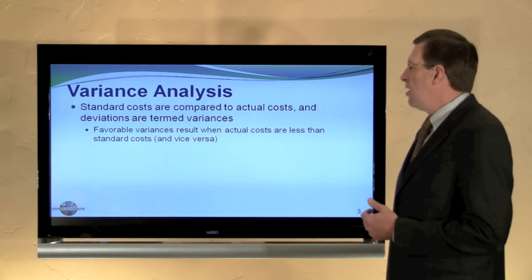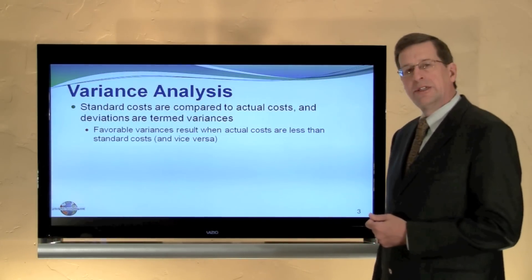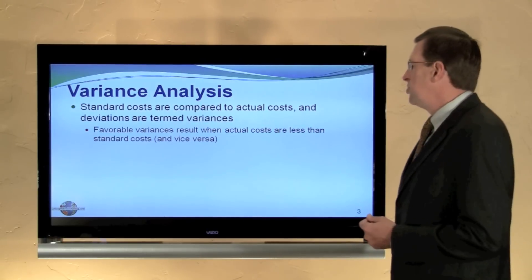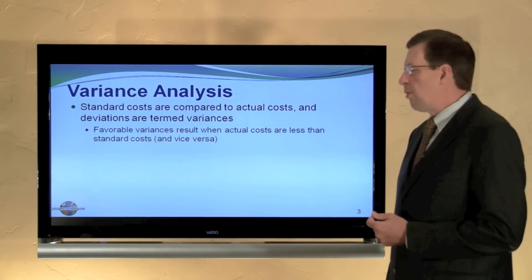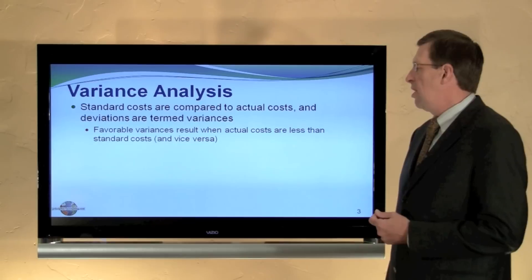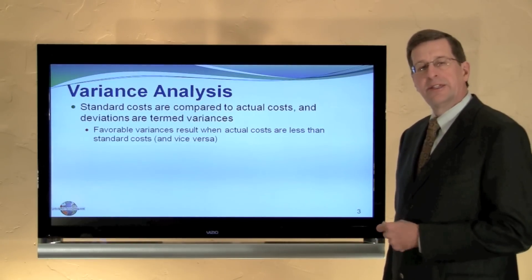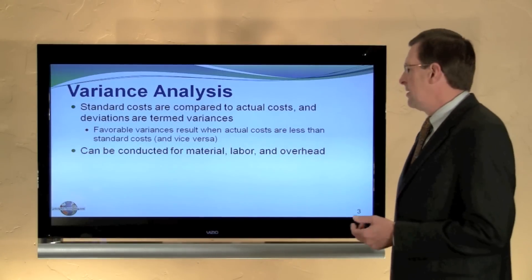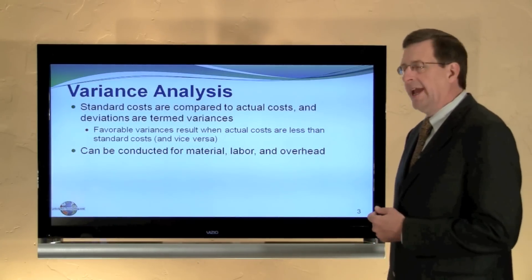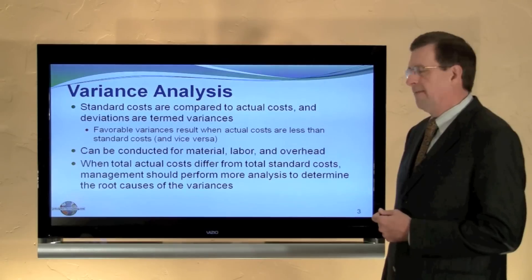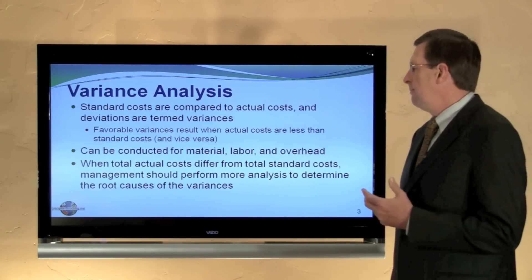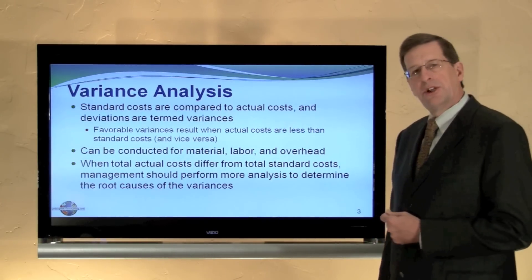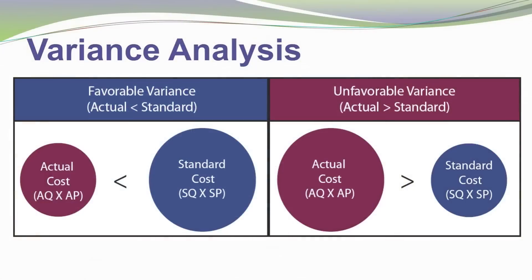Remember that standard costs are compared to actual costs, and deviations between those are termed variances. Favorable variances result when actual costs are less than standard costs, and vice versa. These variance analyses can be conducted for material, labor, and overhead components. When total costs differ from total standard costs, management should perform more analysis to determine the root cause of the variances. The overall framework for considering variance analysis is actually quite simple.